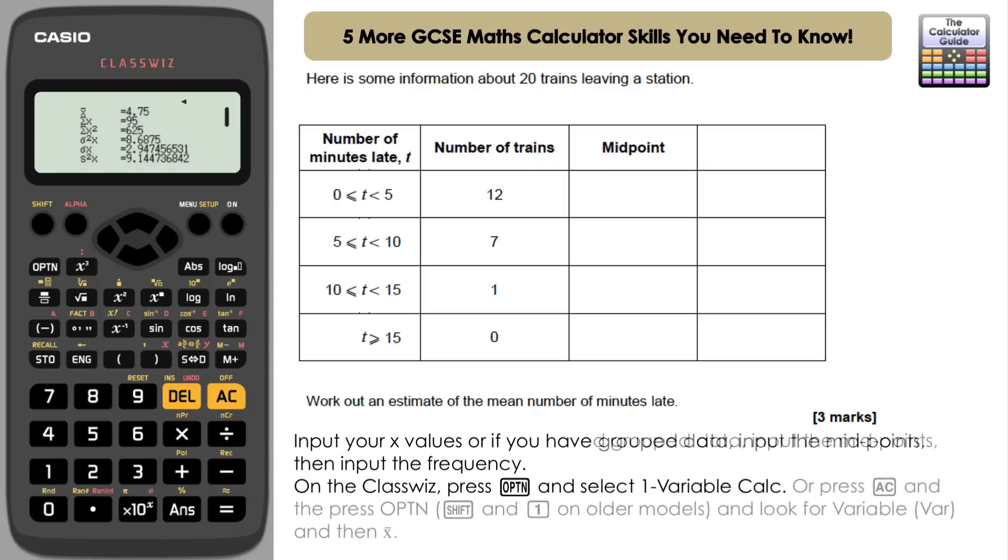Another way you can get the mean is from the table or from the screen. You can press AC, and then you can press option. If you're using a previous model, it's going to be shift and 1 for the stats menu. And then on the ClassWiz, you need to navigate down to variable. On the previous model, it's 4 for var, and then you're looking for X bar, which is 1 in this case. 1 equals, it should present an X bar there. That's going to represent the mean. Just press equals, and that will show your mean for you. So 4.75.